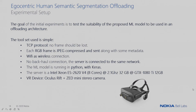I'm going to introduce our experimental setup. The goal for the initial experiments is to test the suitability of the proposed machine learning model to be used in an offloading architecture. The toolset we used is quite simple: we use TCP protocol so we don't lose any frames, JPEG compression to reduce transmission overhead, and these JPEG-compressed images are sent with some metadata. Currently we are using Wi-Fi as our wireless connection, with no backhaul connection — the server is directly connected to the same network.